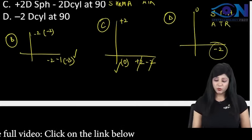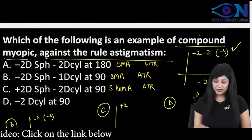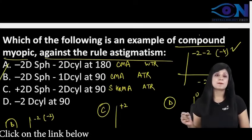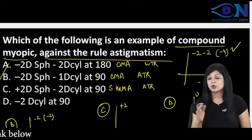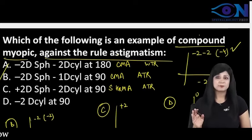So this is against the rule. What they are asking is compound myopic against the rule. Therefore answer is B. I hope you have understood it and whenever you practice please practice it orally only because in the exam you have to read it orally.